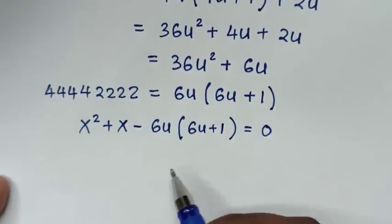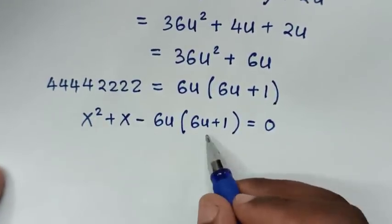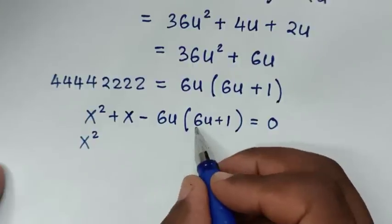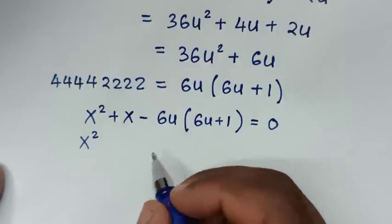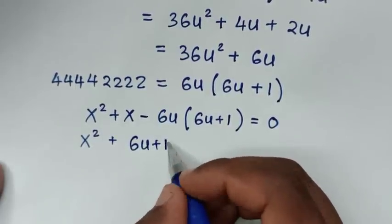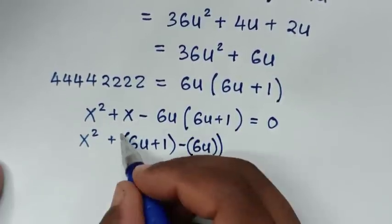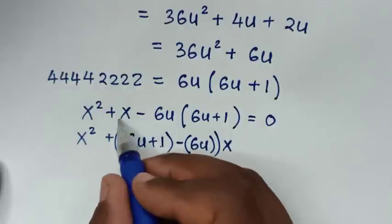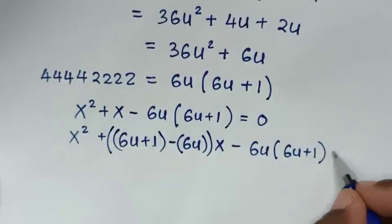From this quadratic equation in terms of x and u, we'll solve by grouping and factorization. We rewrite x as (6u + 1)x minus 6u·x, since (6u + 1) minus 6u equals 1, and 1 times x is x. So it becomes x squared plus (6u + 1)x minus 6u·x minus 6u(6u + 1) is equal to 0.